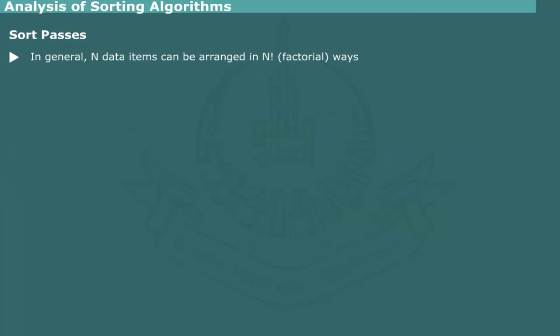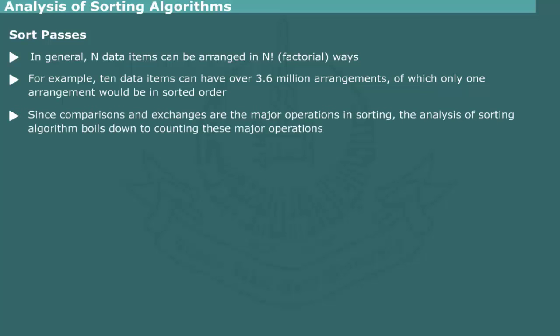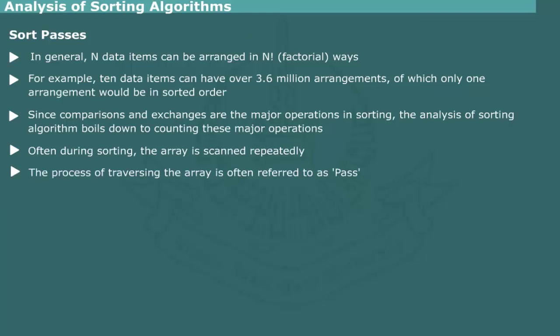In general, a set of N data items can be arranged in N! ways. The possible arrangements grow tremendously as the number of items increases — for example, a collection of 10 elements can have over 3.6 million arrangements. An acceptable algorithm should cater for all possible arrangements of data. In average case analysis, it is assumed that all N! arrangements are equally likely. The analysis boils down to counting all exchanges and comparisons during execution. The process of completely traversing the array is often referred to as a pass in sorting terminology.